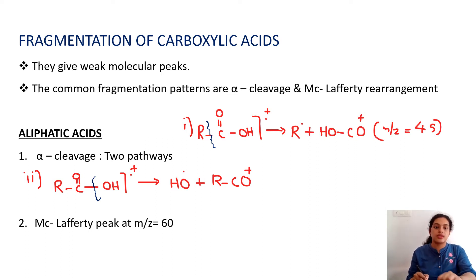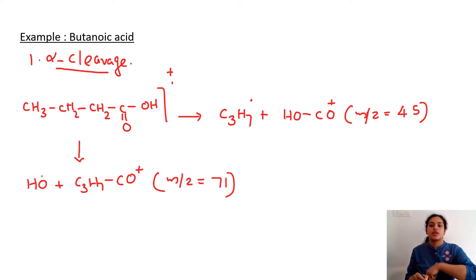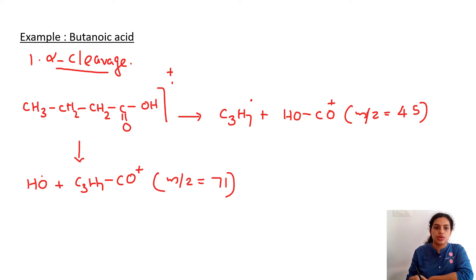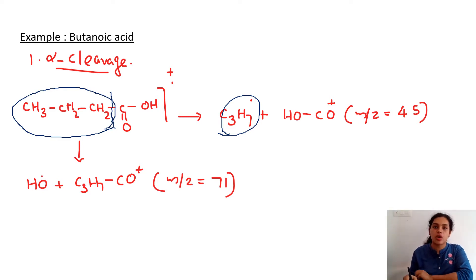The second pattern is the McLafferty rearrangement peak, which is obtained at m/z = 60 for almost all carboxylic acids. Taking butanoic acid as an example for alpha cleavage: the fragmentation takes place such that C3H7 is expelled as a radical, and the remaining fragment gives m/z = 45.